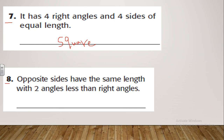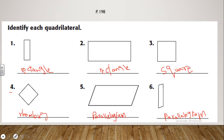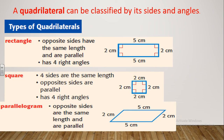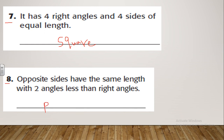Let's see question number eight. It asks: opposite sides have the same length, with two angles less than right angle. Let's look back at our shapes. Which one has two sides equal in length and angles less than right angle? The answer is the parallelogram. Here and here it's a right angle, but if you look carefully at the last one, it's less than a right angle. So that will be a parallelogram.